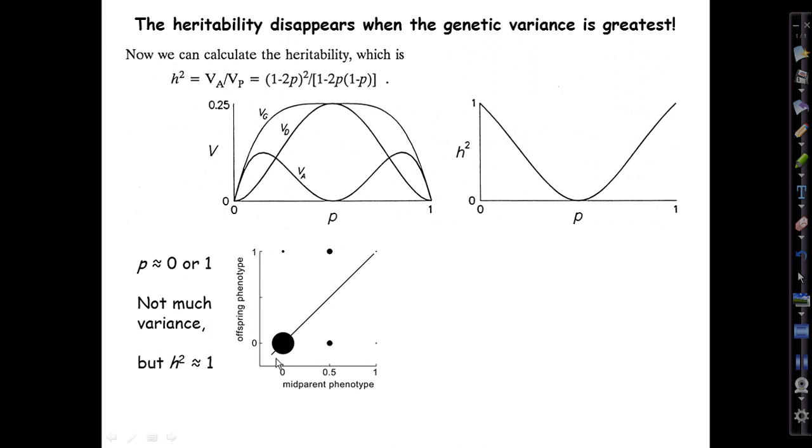At the ends when p is near zero or one, there isn't much variance, but the heritability is nearly one. Here's the mid-parent offspring distribution. At either side, the mid-parent phenotypes are mostly zero, and so are the offspring phenotypes, but there is a strong regression. In the limit, this regression line has a slope of one, meaning the heritability is near one.